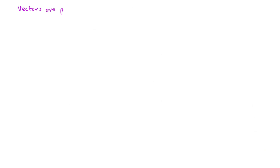When it comes to vectors, we can say that vectors are parallel when they have the same direction. It doesn't really matter what their magnitude is, but as long as they have the same direction, that means they must be parallel.